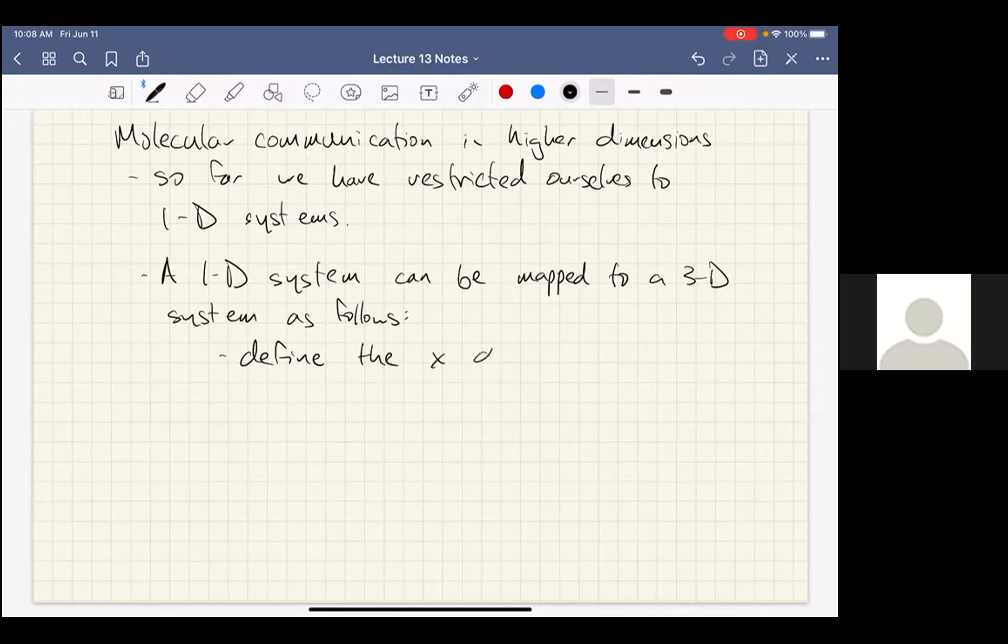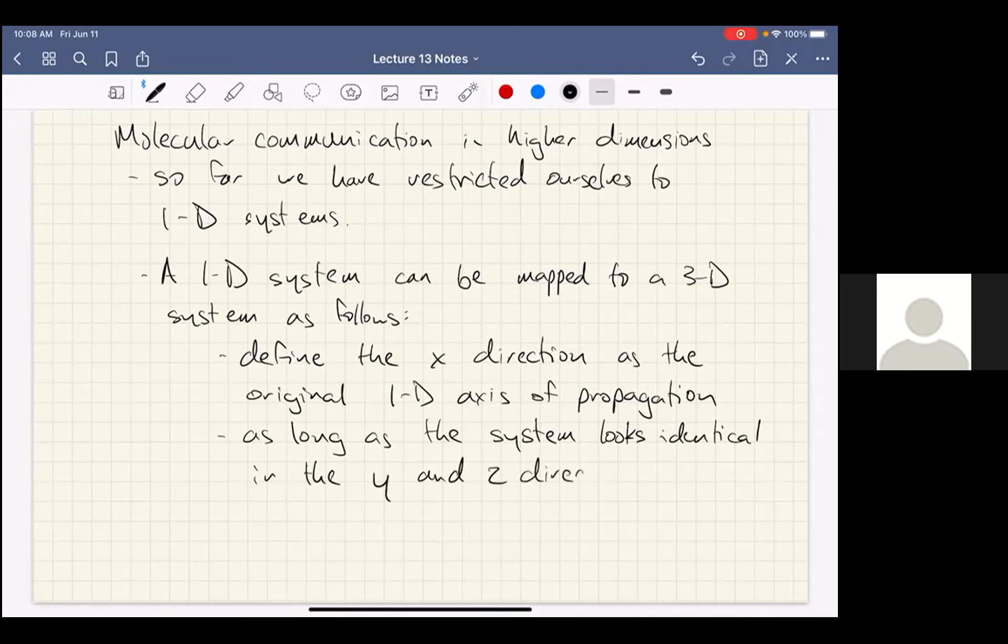As long as the system looks identical in the y and z directions, the 3D system is identical to the 1D system. So this is just a way of thinking about how to map from the 1D systems that we've talked about to 3D systems and then we can generalize.